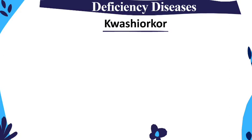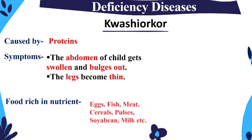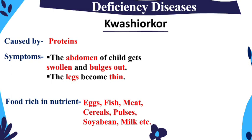The next disease is Kwashiorkor. Kwashiorkor is caused by protein deficiency. Symptoms include swelling of the abdomen — the abdomen is the lower part of the stomach — and the body becomes very weak with thin legs. To prevent this, consume protein-rich foods such as eggs, fish, meat, cereals, pulses, soya beans, milk, and milk products.